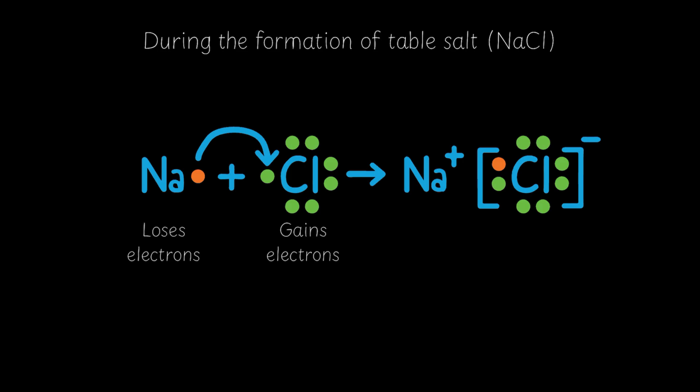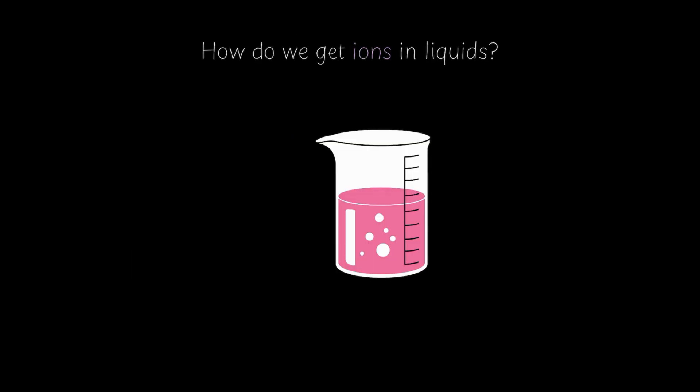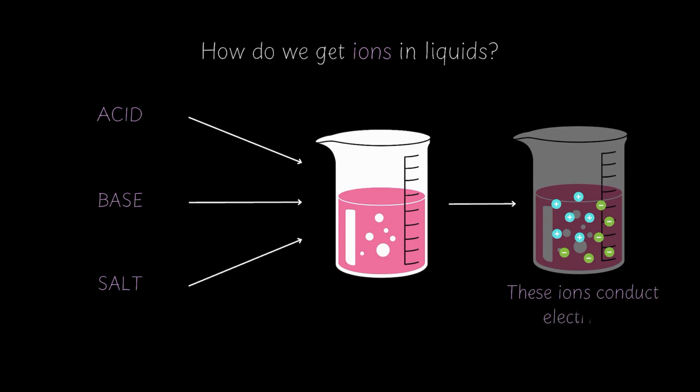And how do we get these ions in any liquid? There are three kinds of compounds that can dissociate in water to form ions: acids, bases, and salts. And when these compounds are added into water, they break apart into ions and those ions can actually move around freely in the liquid, and that's what makes a liquid able to conduct electricity.